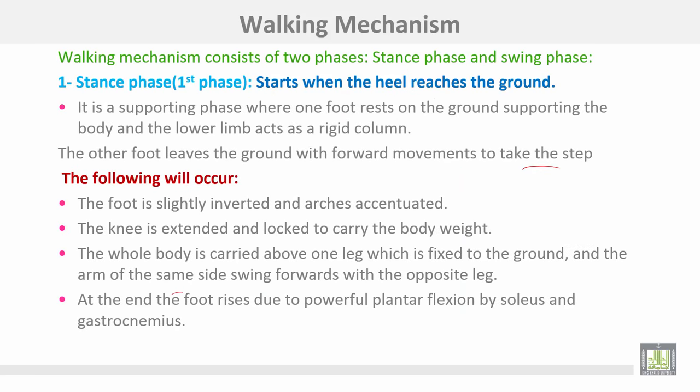Walking mechanism consists of two phases: the stance phase and the swing phase. The stance phase or first phase starts when the heel reaches the ground. It is the supporting phase where one foot rests on the ground supporting the body and the lower limb acts as a rigid column. The other foot leaves the ground with forward movement to take the step.